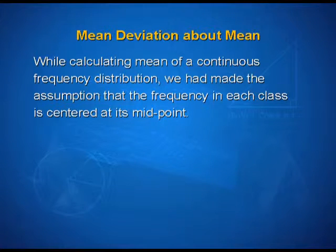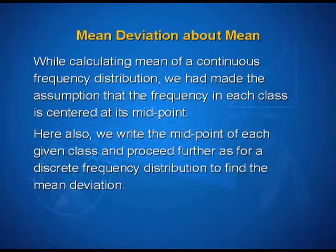Now let us learn how to calculate the mean deviation about mean. While calculating the mean of a continuous frequency distribution, we make the assumption that the frequency in each class is centered at its midpoint. Here also, we write the midpoint of each given class and proceed further as for a discrete frequency distribution to find the mean deviation. Let us take up an example.